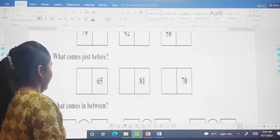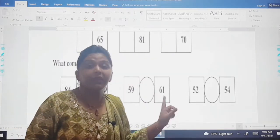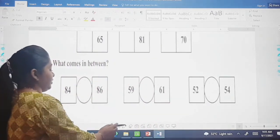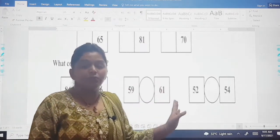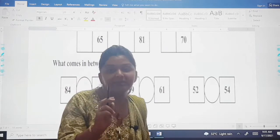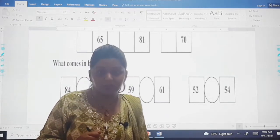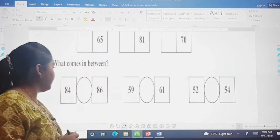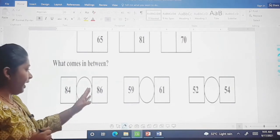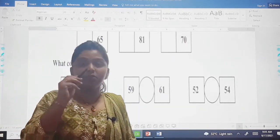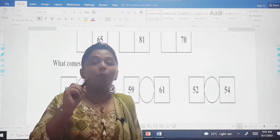Let us see the next question. What comes in between? In between, dear children, that means in between these two numbers one number is missing so we have to write that number. Understood, are you all clear? Now see here, one side there is 84 and the other side there is 86.